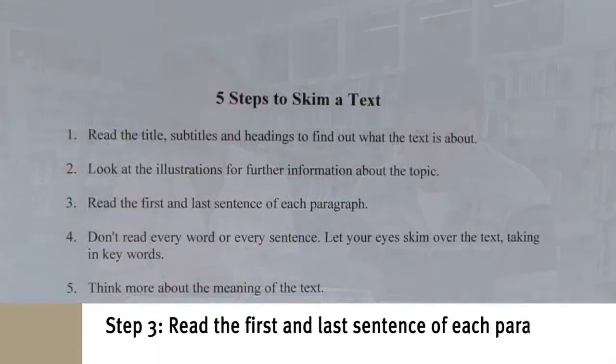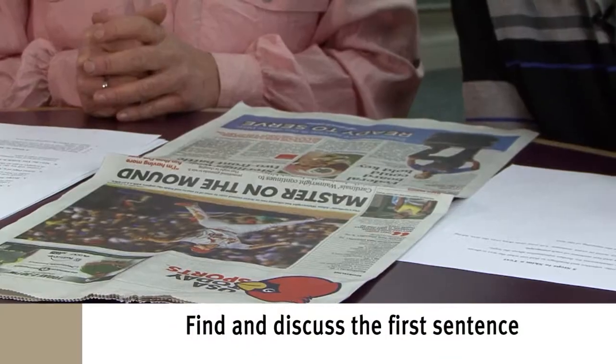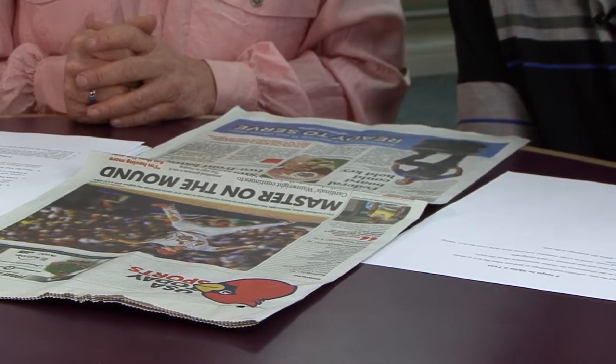Step three: read the first and last sentence of each paragraph. The first sentence reads: 'St. Louis, we fall in love with the radar gun, gushing over kids who throw in the triple digits, giving them more hype than a Kardashian's wedding.' That's probably about how we love star pitchers who throw fast — those high-speed pitchers. So that gives us information about what the article will be about.